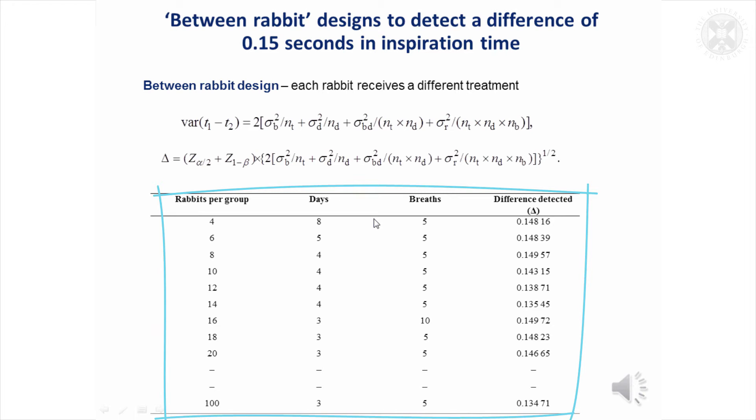Each of these studies was sufficient to achieve that difference between the treatments. We could have a study with just four rabbits carried out on eight days. If we were prepared to do eight days, we would only need to use four rabbits. And interestingly, we didn't need the hundred breaths. You only need to measure a few breaths in each of the rabbits to achieve the right amount of power.